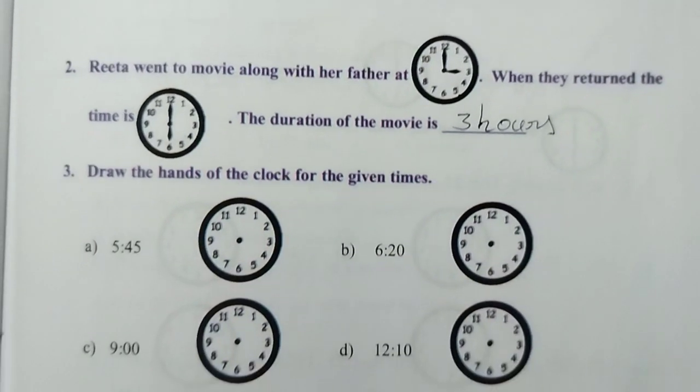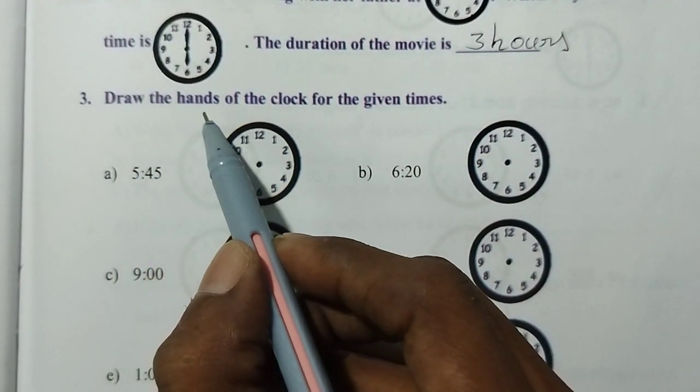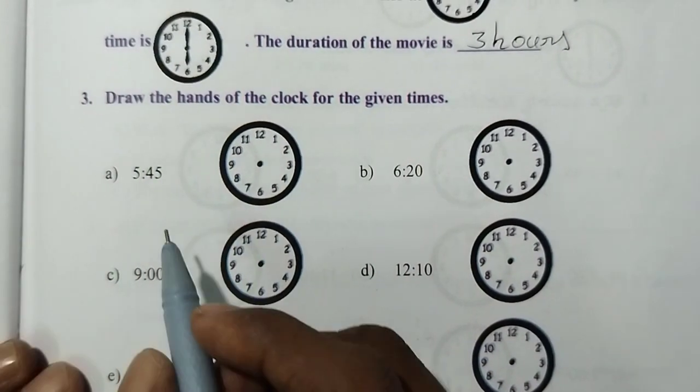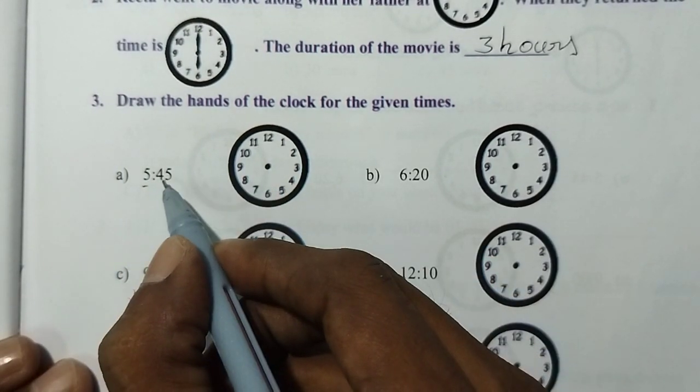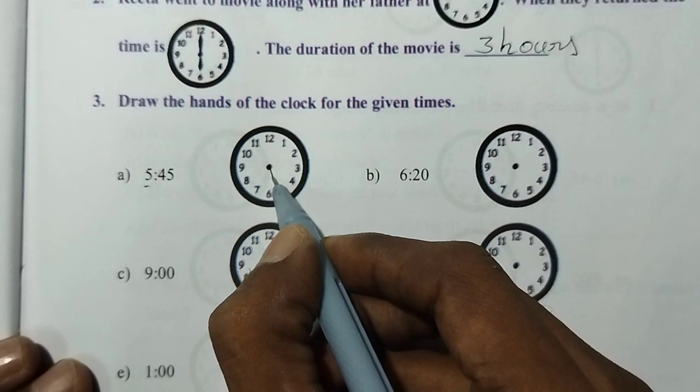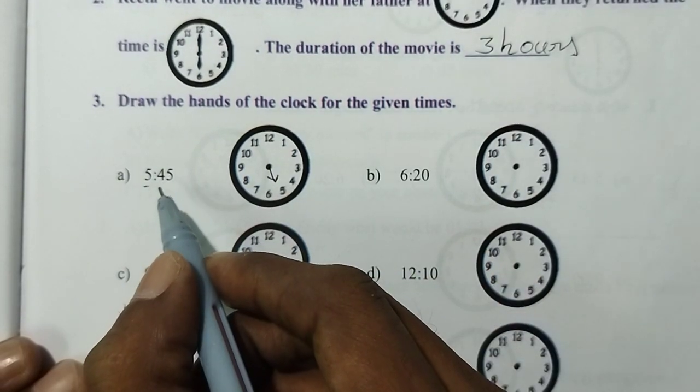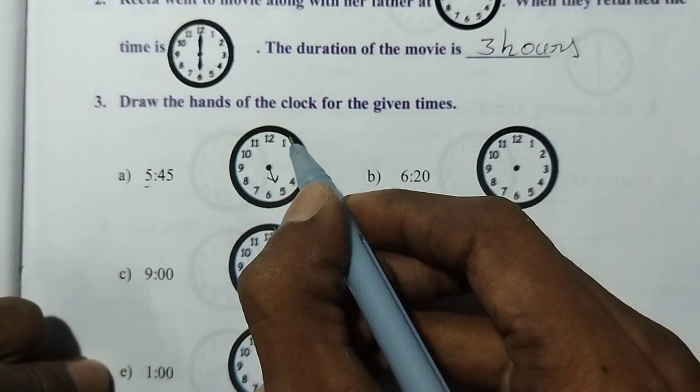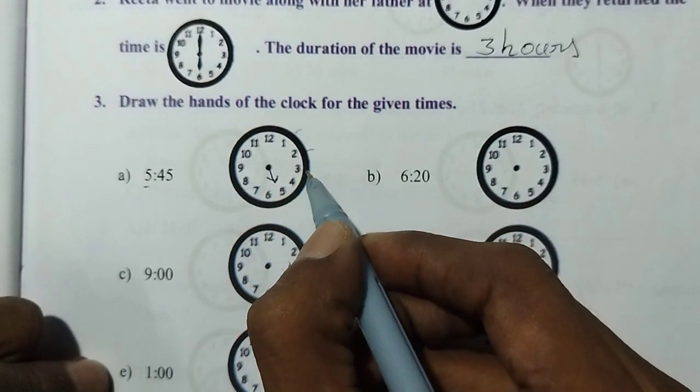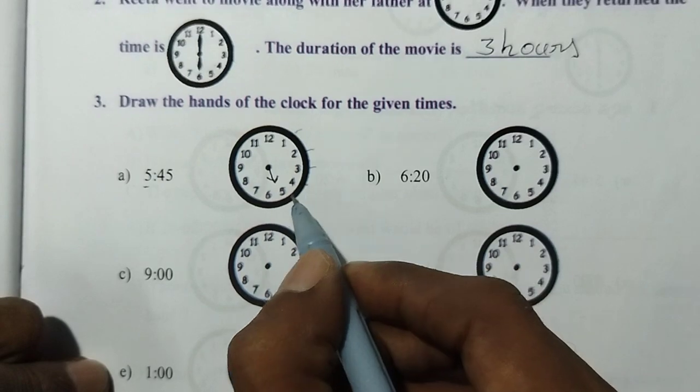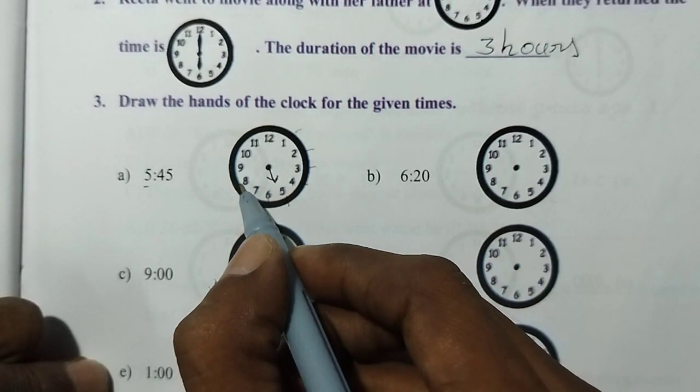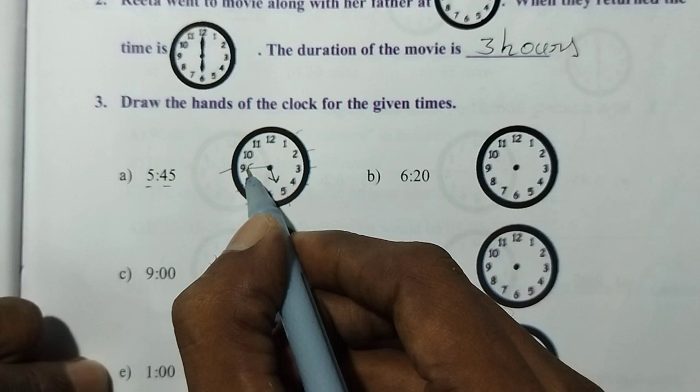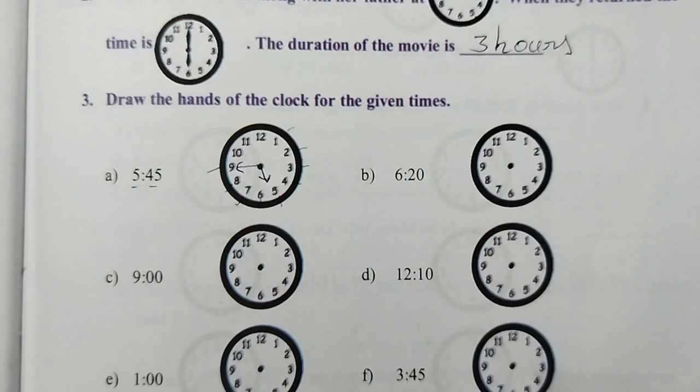Draw the hands of the clock for the given times. For 5:45, the small hand is at 5. For 45 minutes, let's count by fives: 5, 10, 15, 20, 25, 30, 35, 40, 45. That's 9 on the clock. So the big hand is at 9.